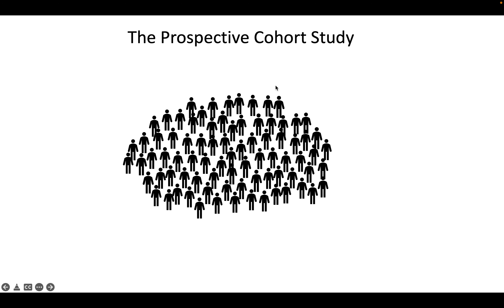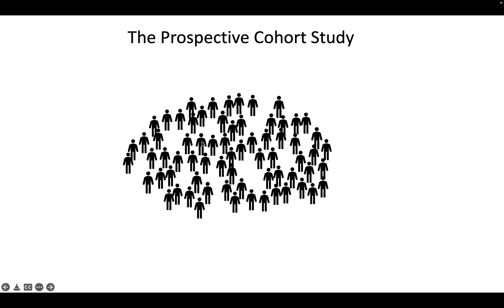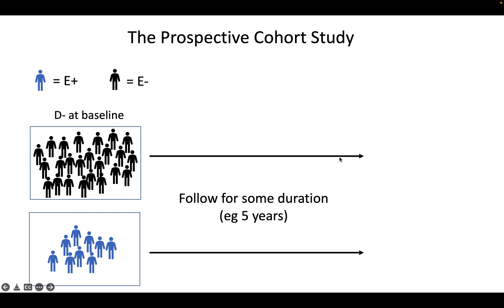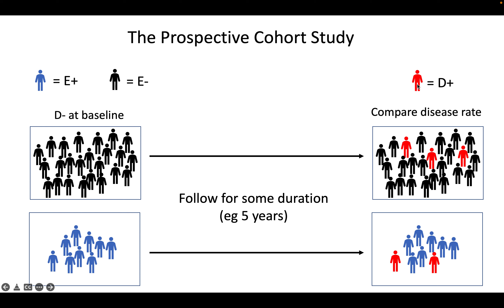In terms of sampling, you first identify and remove disease-positive individuals since they're ineligible. Then you randomly select from the population. You determine each person's exposure status — the most common design is exposure versus lack of exposure — put them into their respective groups, and follow both over time, such as five years, to see who became disease positive.